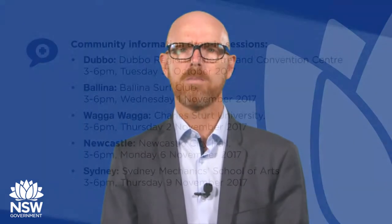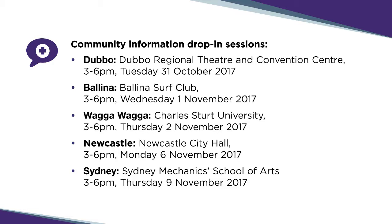Feedback can be provided via a submissions process which is outlined on our website and the Government's Have Your Say website. All submissions received will be made available to the public on the Crown lands website unless otherwise indicated. All submissions will also be considered in the development of the final community engagement strategy. During the submission period, we will also be holding information sessions in Ballina, Wagga Wagga, Dubbo, Newcastle and Sydney. These informal sessions will allow you to find out more about the strategy and have your questions answered by our team. Please see the Crown land website for more information.